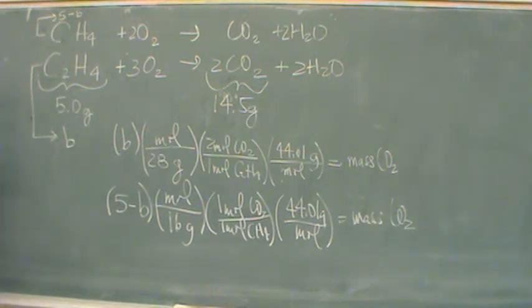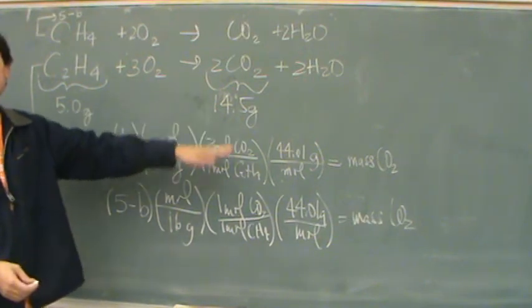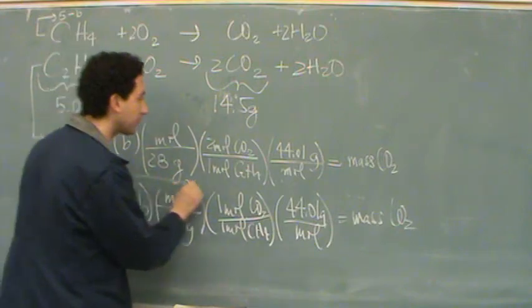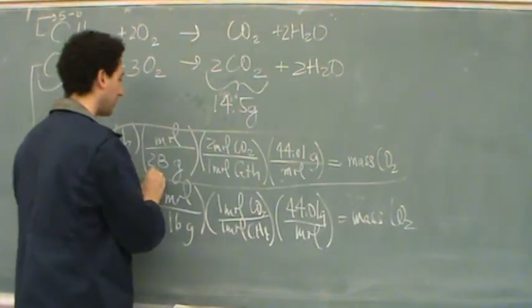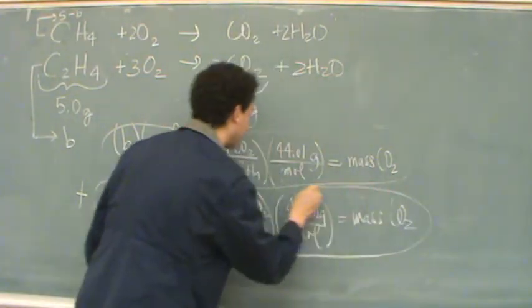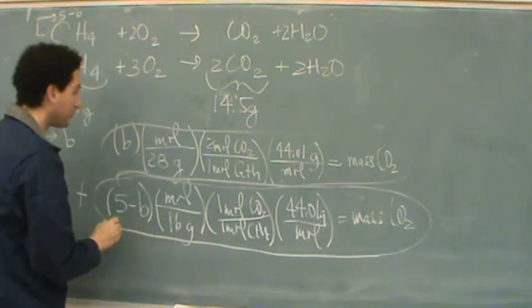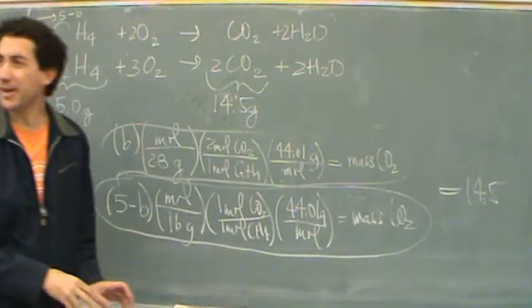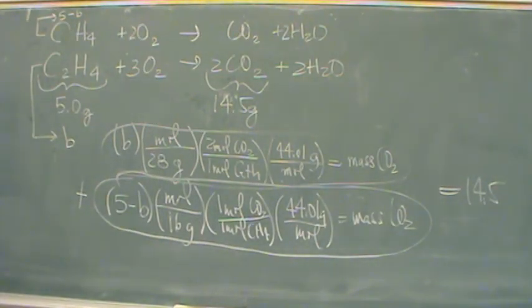Now I have mass of CO2. Now the 14.5 is what? It would be the sum of these two. If you sum both of these up. So this one plus this one. This equals 14.5. Is that alright? One equation, one unknown, B. Solve for B.